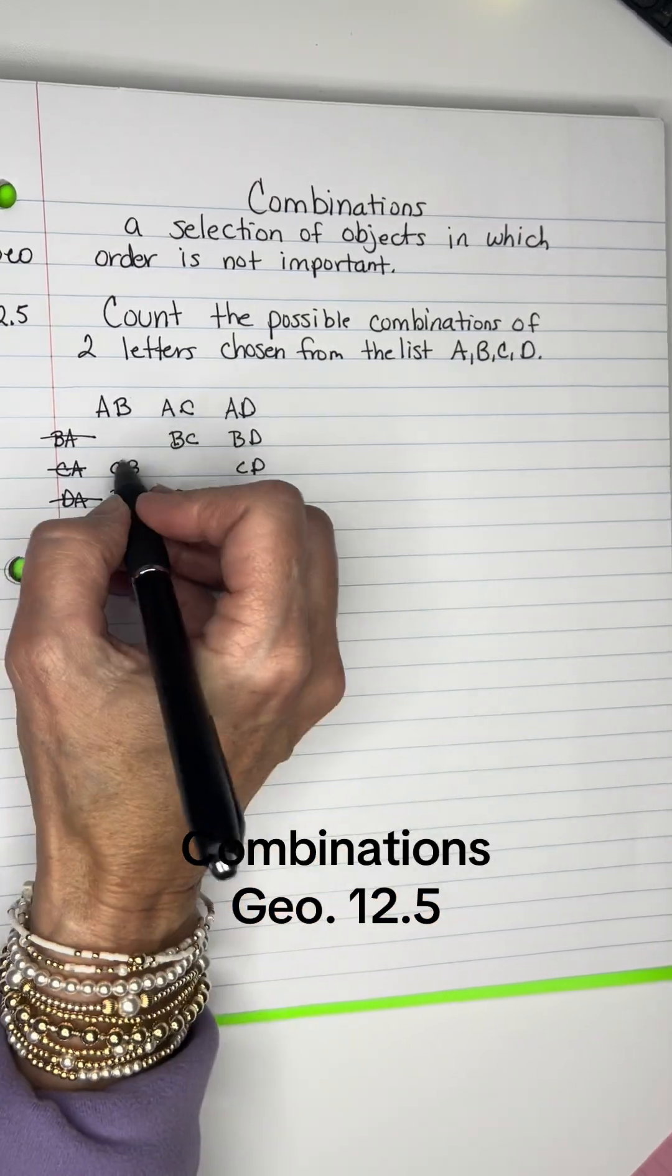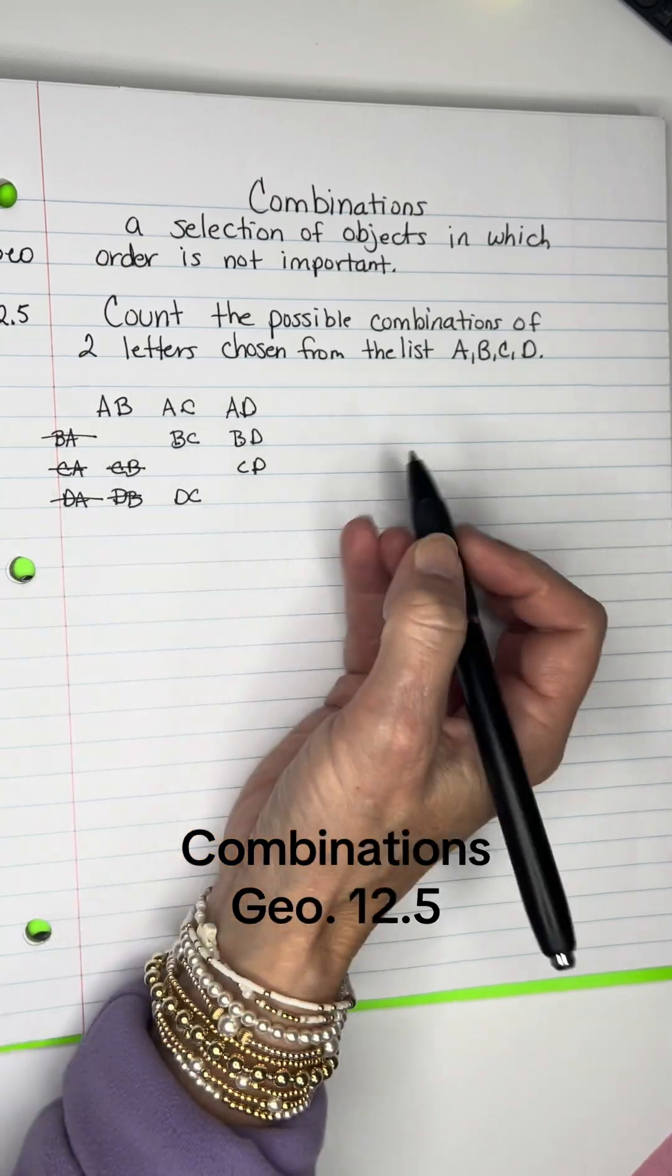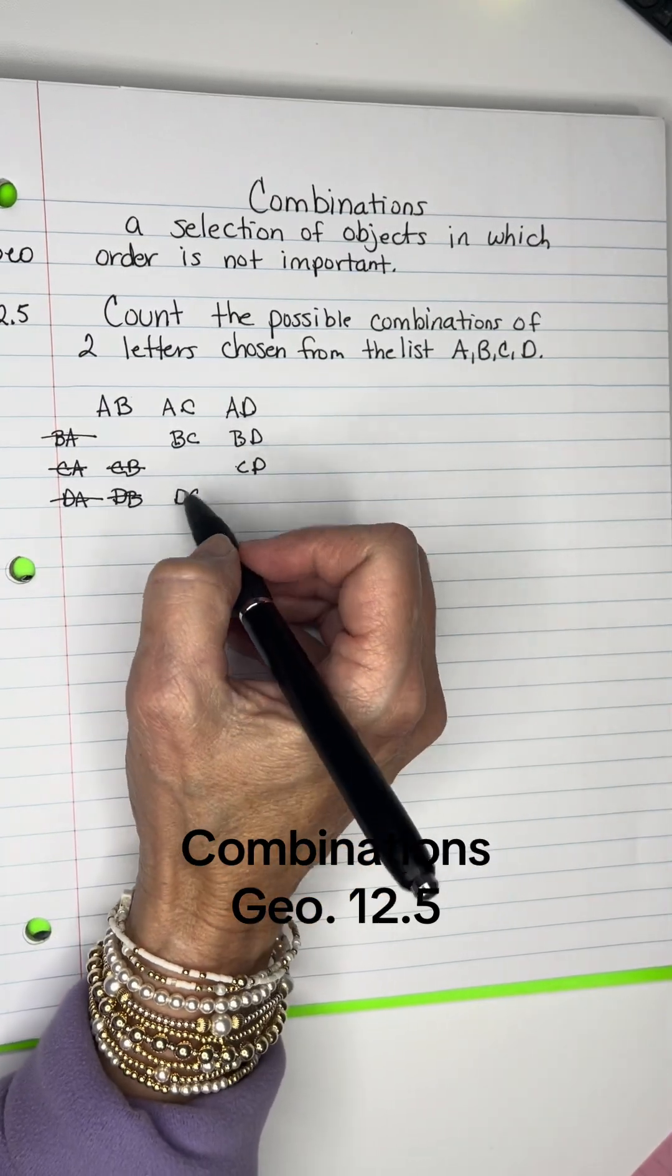BC is the same as CB, BD is the same as DB, and then CD is the same as DC.